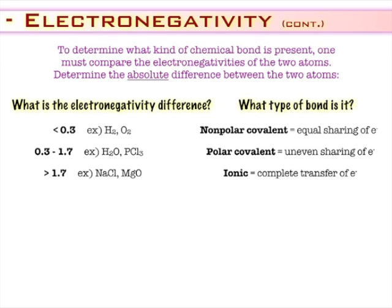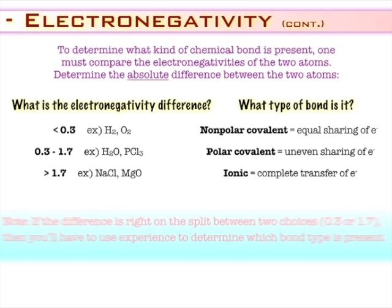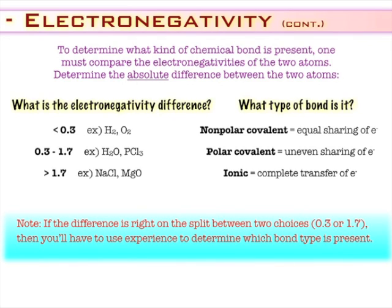Some people will argue about where the breakpoints are for the three bond types, but they're all pretty similar. Remember this is all a gradient — there's not a real big difference between the high side of one category and the low side of another. If there's not much of an electronegativity difference, like with diatomics, you get a true nonpolar covalent bond with equal sharing. If one element starts to dominate with a slightly higher difference, you get polar covalent — still sharing, but unequal, like gathering toys closer to yourself while still technically sharing. A complete transfer of electrons gives you an ionic bond. If you're right on the breakpoints, experience helps you decide which category makes more sense.